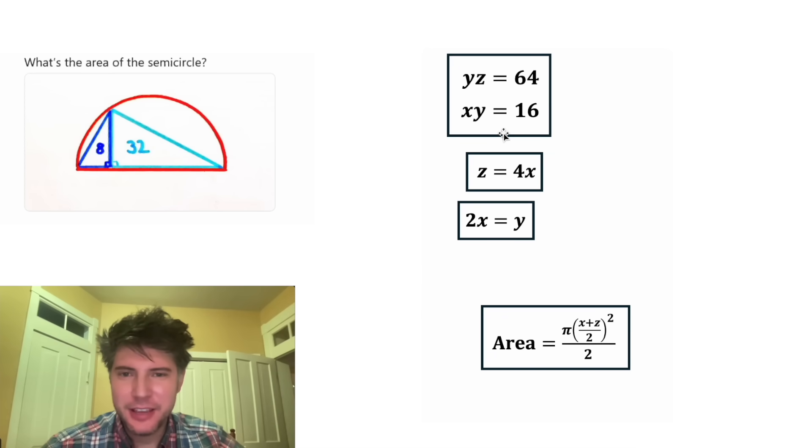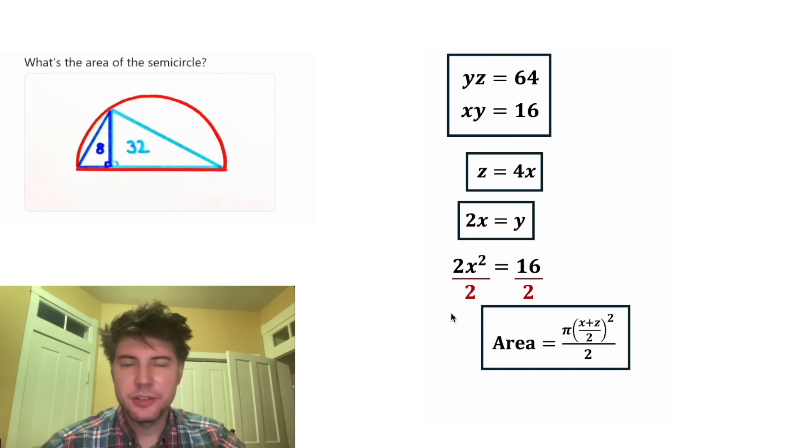So from here, let's take this XY equals 16 and copy it down here. And I want to substitute in the place of this Y the 2X. So let's rearrange these. And in the place of the Y, we'll plug in 2X. 2X times X is 2X squared. And let's divide both sides of the equation by 2. This 2 and this 2 will cancel each other out. And 16 divided by 2 is equal to 8. So we have X squared is equal to 8. This looks important. Let's put a box around it.